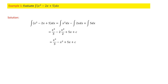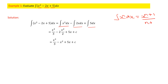Problem 1: Evaluate ∫(x² - 2x + 5)dx. The function has three terms: x², -2x, and 5. We integrate each term separately — ∫x² dx, then ∫2x dx, then ∫5 dx. Recall the power rule: ∫xⁿ dx = x^(n+1)/(n+1). For x², n=2, so we get x³/3.